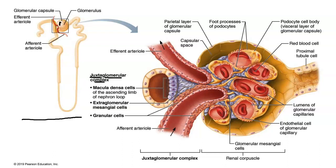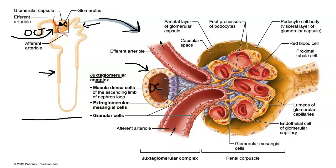Looking at a bigger picture of the nephron, here's Bowman's capsule, the proximal convoluted tubule, and the loop of Henle. Notice that the distal convoluted tubule sweeps right by Bowman's capsule. The distal convoluted tubule is adhered to the afferent arteriole. Here's the afferent arteriole coming in, the glomerulus, and the efferent arteriole taking blood away. The afferent arteriole contains specialized smooth muscle cells — this is how the kidney monitors blood pressure.